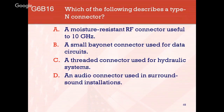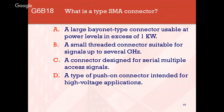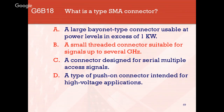A Type N connector is moisture resistant and useful up to 10 GHz. The SMA connector is a small threaded connector used in many applications, especially portable radios, suitable for signals up to several gigahertz — it's the only answer selection that references gigahertz. The PL-259 is commonly used for RF service at frequencies up to 150 MHz.